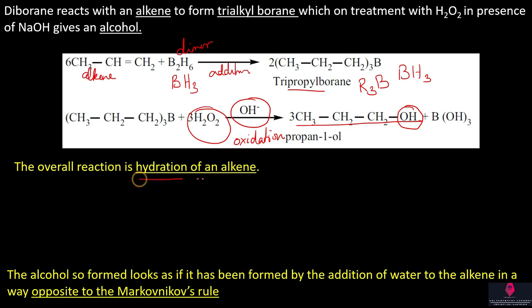The overall reaction is the hydration of an alkene — a double bond with H and OH added to give an alcohol. This is an addition of water. This reaction is hydration of an alkene. The previous reaction uses sulfuric acid, and for an unsymmetrical alkene it follows Markovnikov's rule, giving a secondary alcohol as the major product.